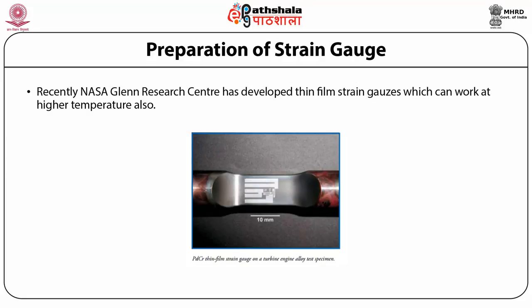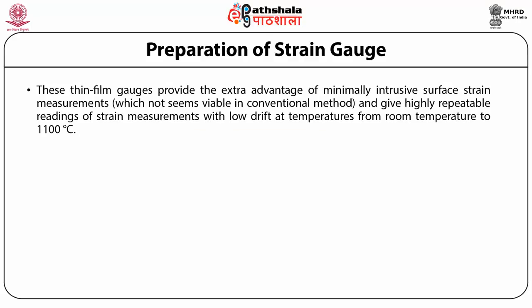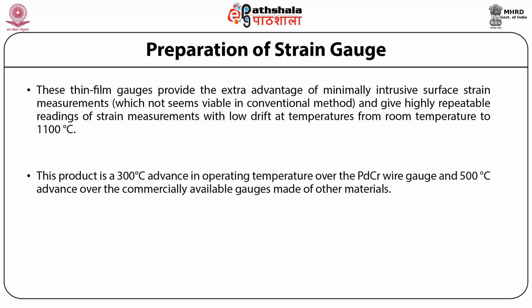Recently, NASA Glenn Research Center has developed thin film strain gauges which can work at higher temperatures. The picture of their final product shows a palladium-chromium thin film strain gauge on a turbine engine oil test specimen. These thin film gauges provide the advantage of minimally intrusive surface strain measurements, giving highly repeatable readings with low drift at temperatures from room temperature to 1100°C. This product represents a 300°C advance in operating temperature over palladium-chromium wire gauges and a 500°C advance over commercially available gauges made of other materials.